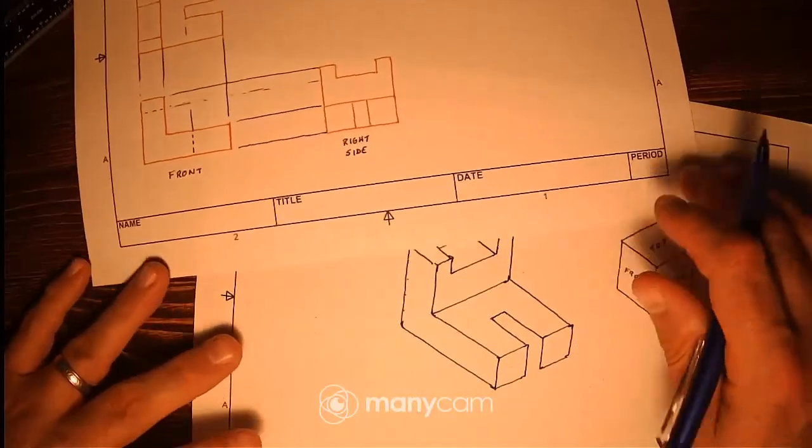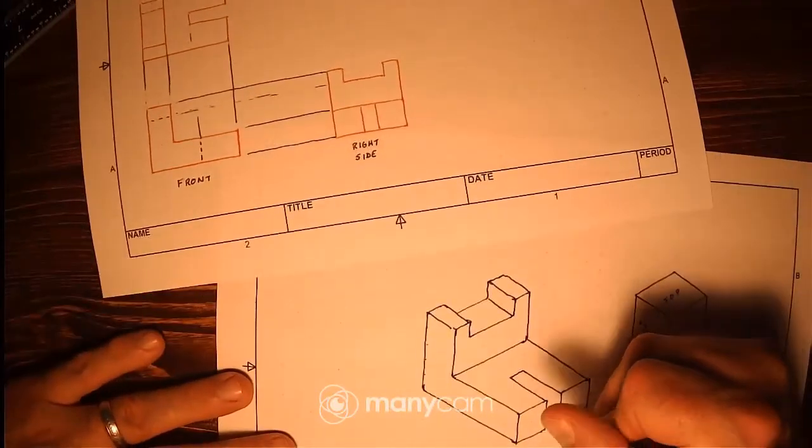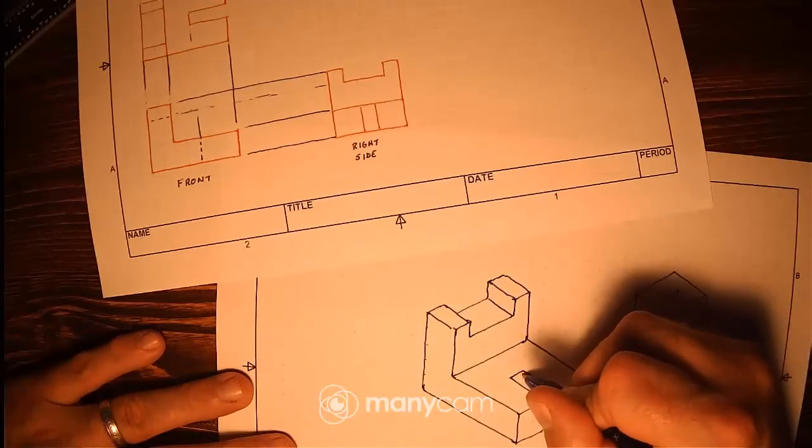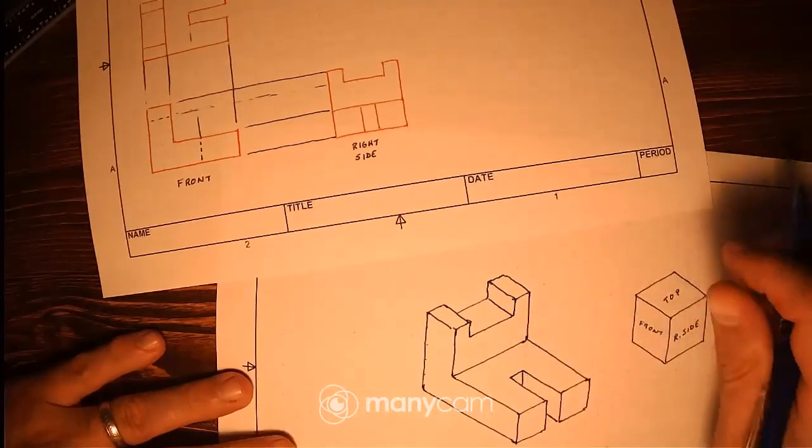Now just kind of some fine-tuning here. I know that I will see that line from an ISO. And I'm also going to see this line.